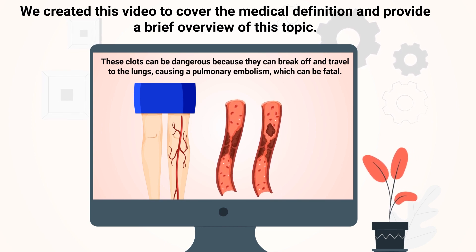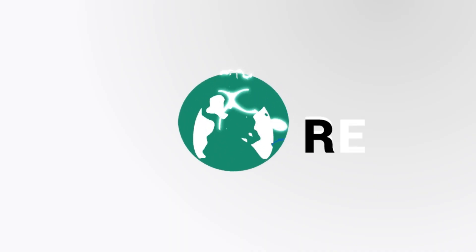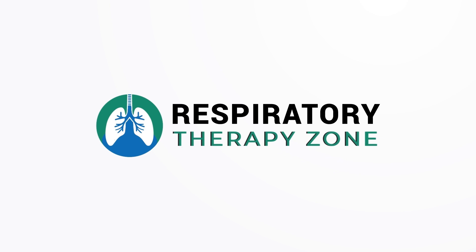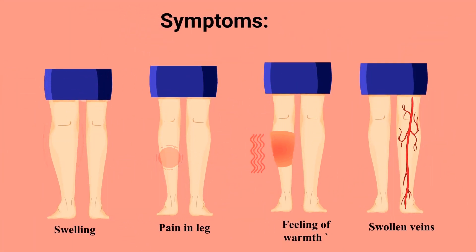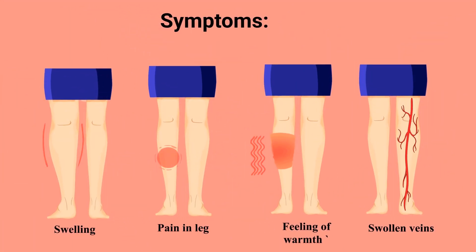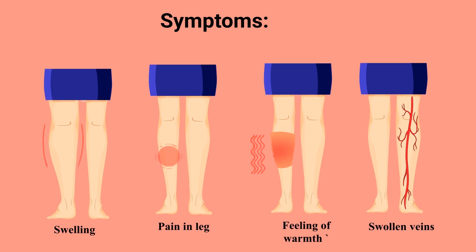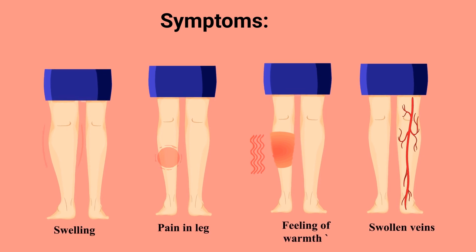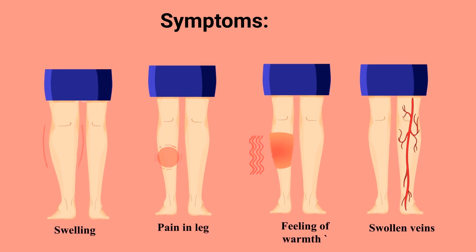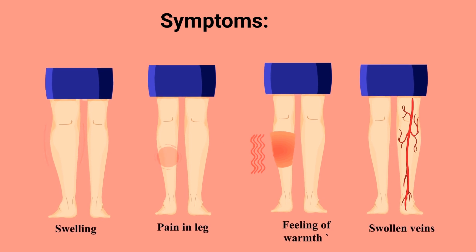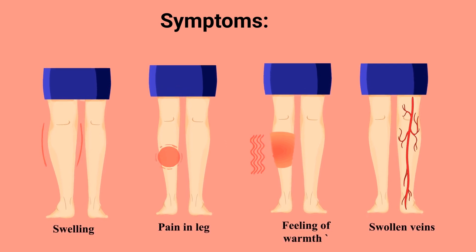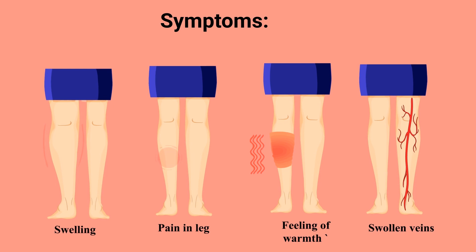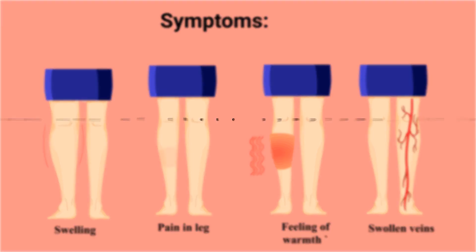We created this video to cover the medical definition and provide a brief overview of this topic. First, let's talk about the symptoms of a DVT, which include swelling in the affected leg, pain or tenderness in the affected leg, a feeling of warmth in the affected leg, and red or dark skin near the painful area.